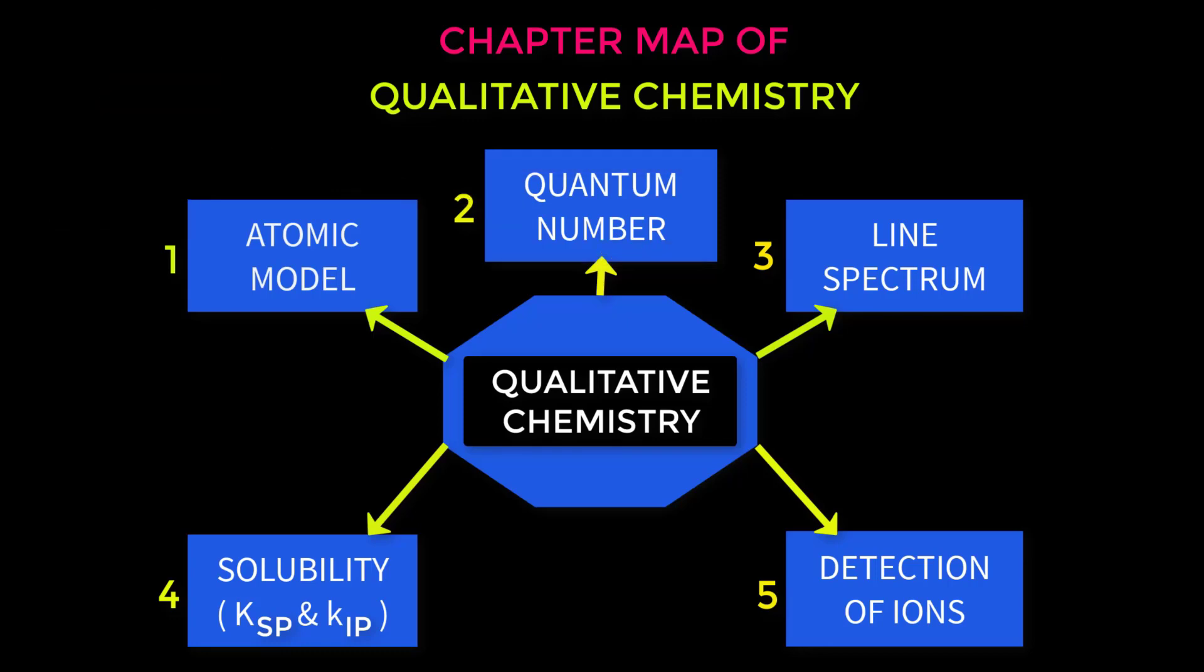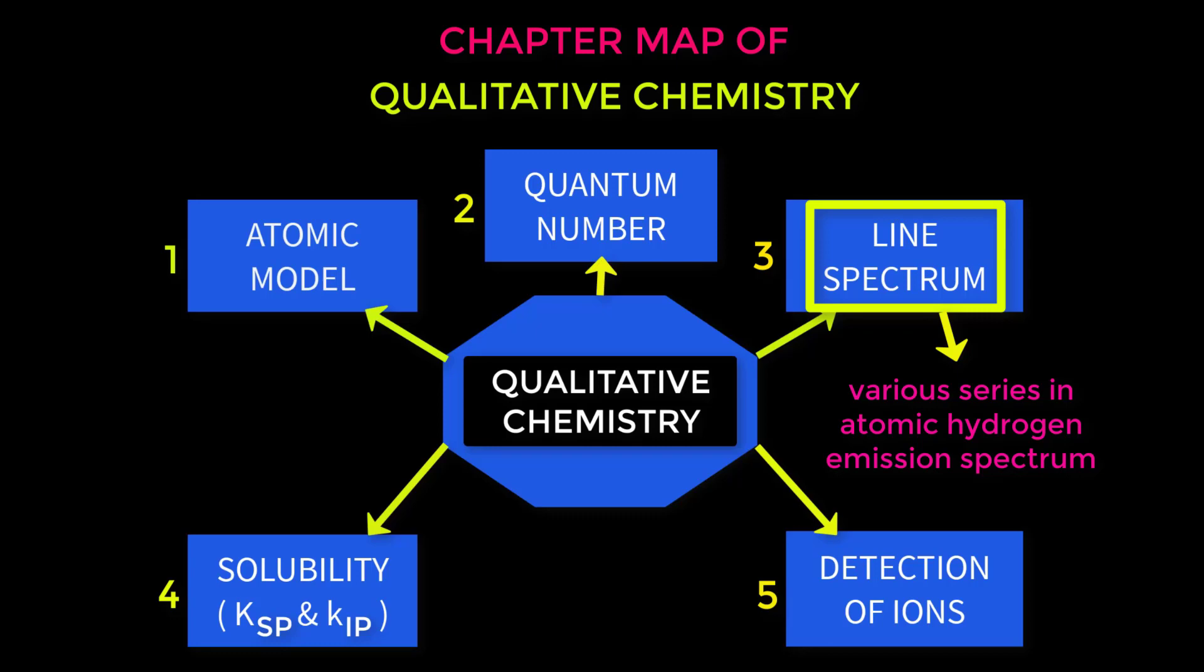Our third topic is line spectrum. From this topic we will have to learn about the various series in atomic hydrogen emission spectrum. We will also have to learn how to calculate wavelength from this topic.